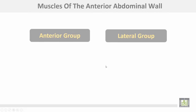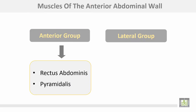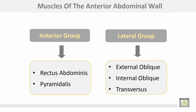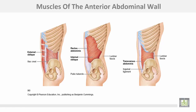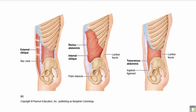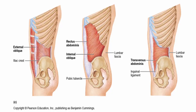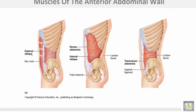The muscles of the anterior abdominal wall are divided into an anterior group and a lateral group. The anterior group consists of the rectus abdominis and the pyramidal muscle. The lateral group consists of the external oblique, internal oblique, and transversus abdominis muscle. You can notice the direction of the fibers for each muscle.